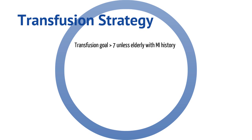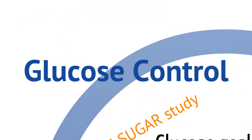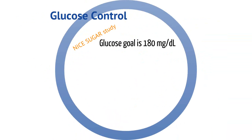Next, let's talk about glucose control, which is important in sepsis as patients will be hyperglycemic. The NICE-SUGAR study showed that glucose goals of 180 are best for patients with sepsis, as this decreases mortality. Stricter control actually leads to higher mortality rates.